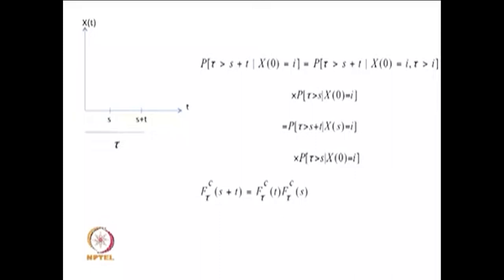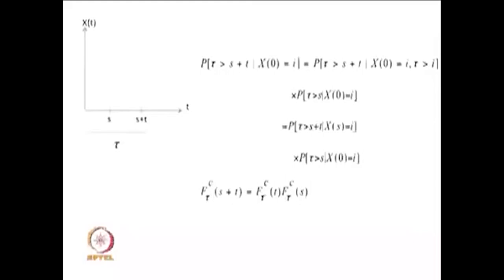Let me make a simple graph. This is t and this is x(t). Suppose the system was in state i at time 0, and after some time it moved into some other state. At time point s it was in state i, and at time point t it moved into some other state. So tau is the time spent in state i from here to here — that is a random variable.